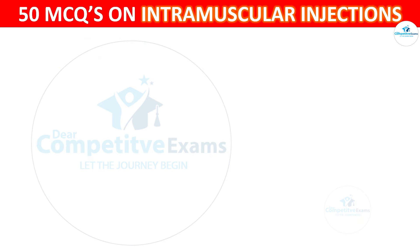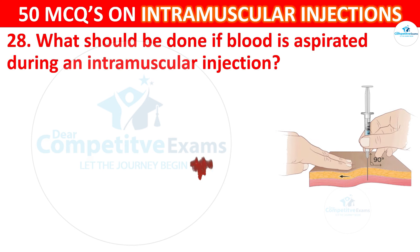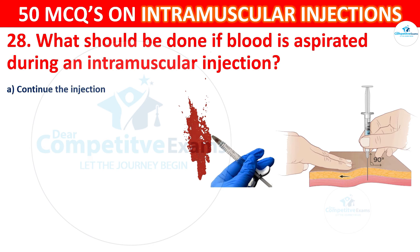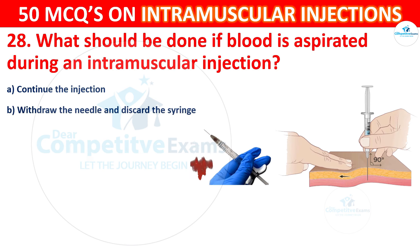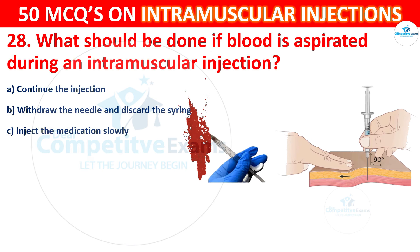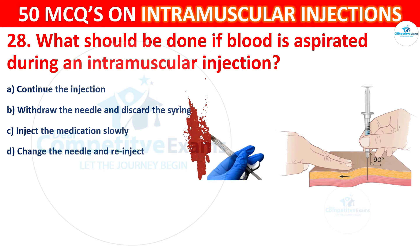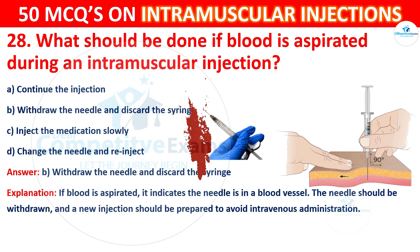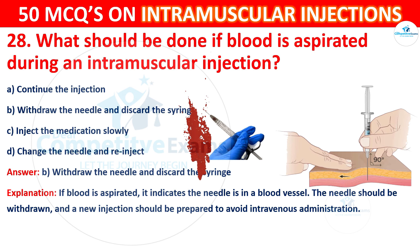Question 28: What should be done if blood is aspirated during an intramuscular injection? Options are: continue the injection, withdraw the needle and discard the syringe, inject the medication slowly, or change the needle and re-inject. The correct answer is B, withdraw the needle and discard the syringe. If blood is aspirated, it indicates the needle is in a blood vessel. The needle should be withdrawn and a new injection prepared to avoid intravenous administration.